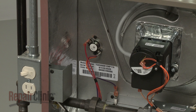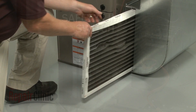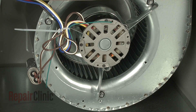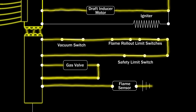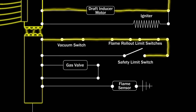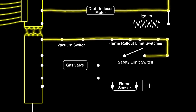Mounted near the heat exchanger is a safety limit switch that monitors the air temperature. If the filter is clogged or the circulation blower fan motor fails, the heat exchanger will overheat. The limit switch will open and the control board will shut off voltage to the gas valve to prevent damage to the furnace.